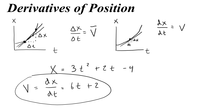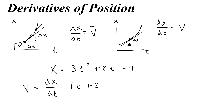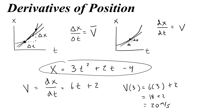I could use that equation to find the velocity at any point. For example, if I wanted to find the velocity at 3 seconds, I would say v at 3 equals 6 times 3 plus 2, or 18 plus 2, so 20 meters per second. Beginning with this original function, I took its derivative and then plugged 3 in for t to figure out the velocity at 3 seconds.